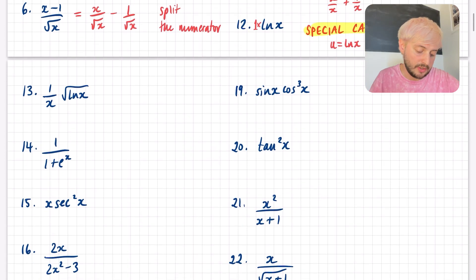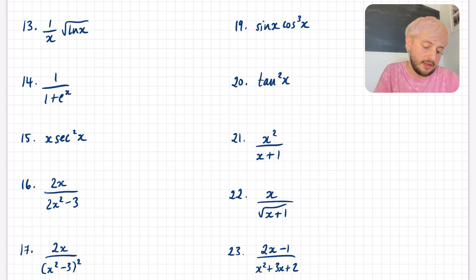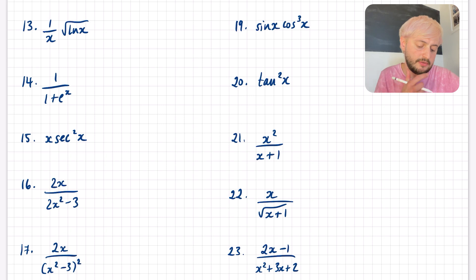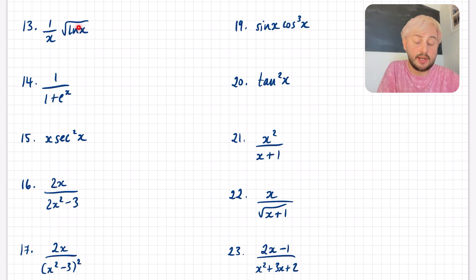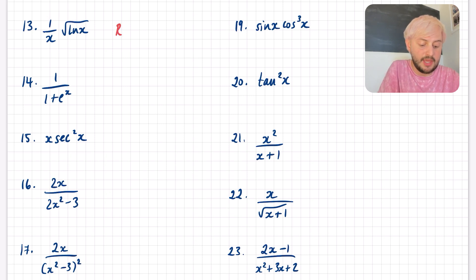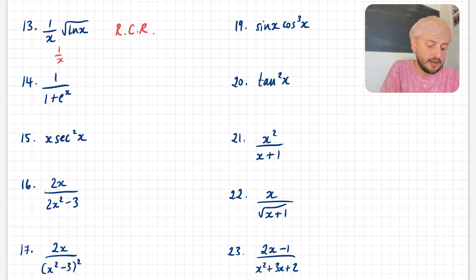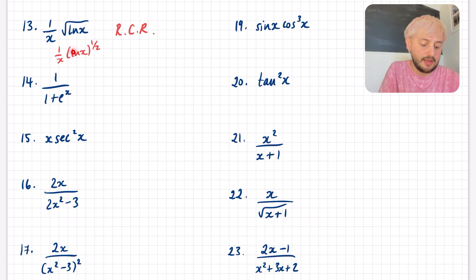Question 13: we've got 1 over (x · √(ln x)). It doesn't appear to be a standard result, and we almost always need to check if there is a reverse chain rule. I see that I've got ln x, and the derivative of ln x is 1/x. So this is definitely telling me there's going to be some kind of reverse chain rule here. You may find it easier if you rewrite it as (ln x)^(1/2) — you can clearly see that 1/x is the derivative of that second function.